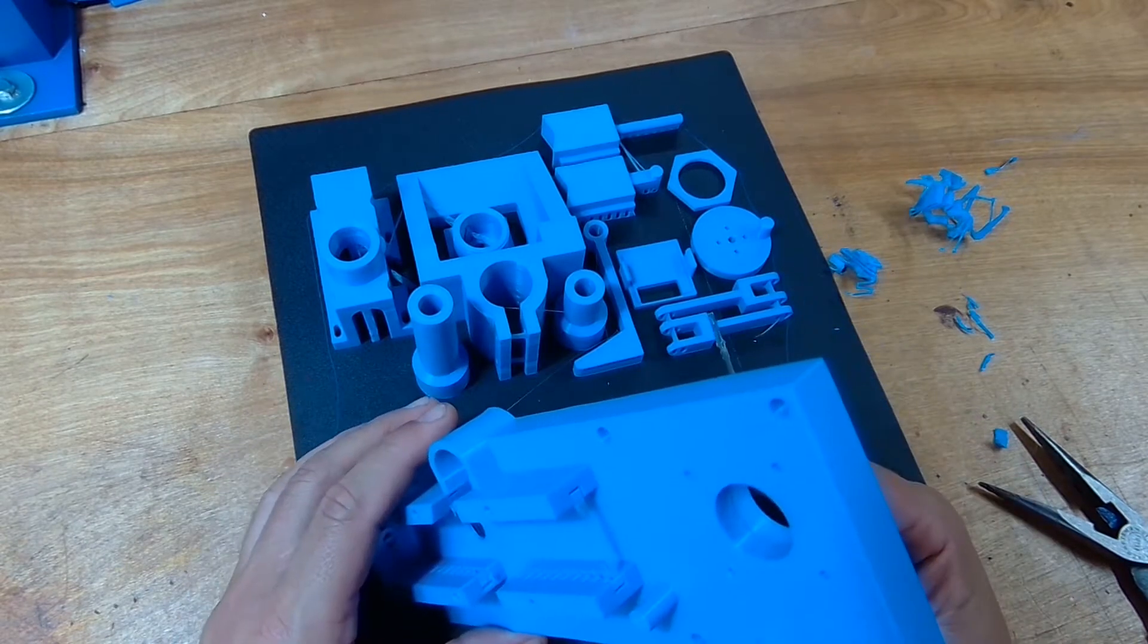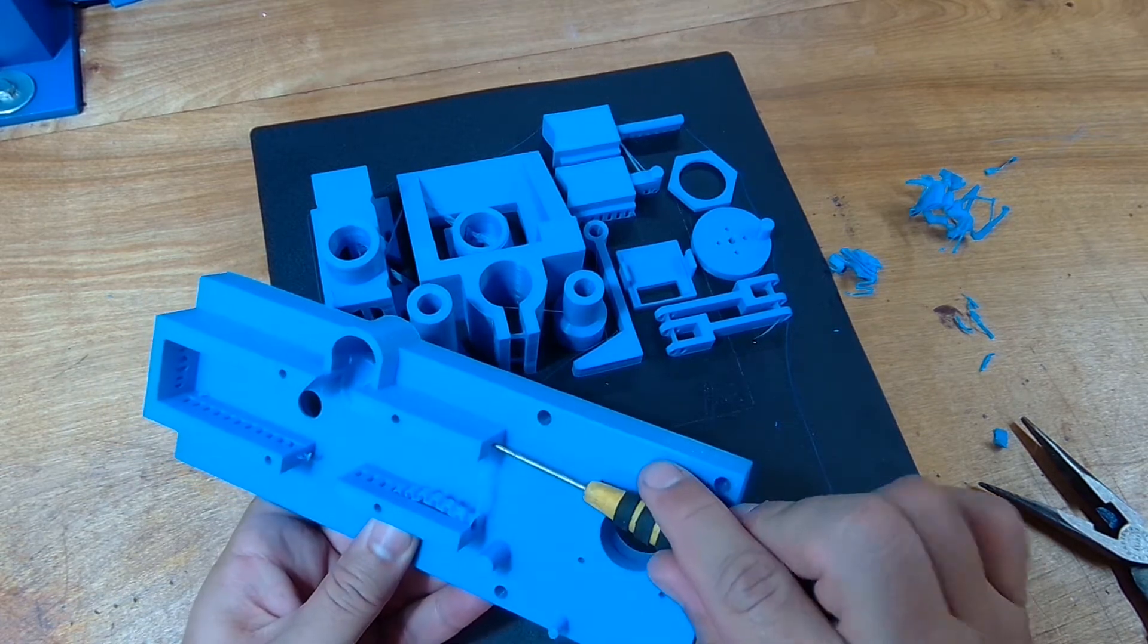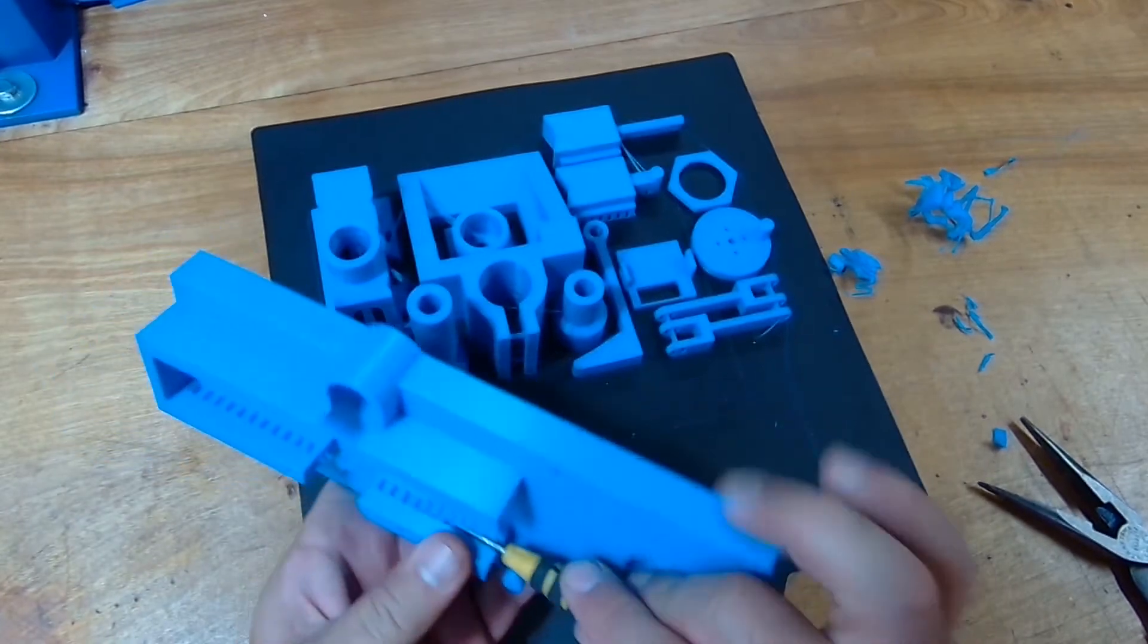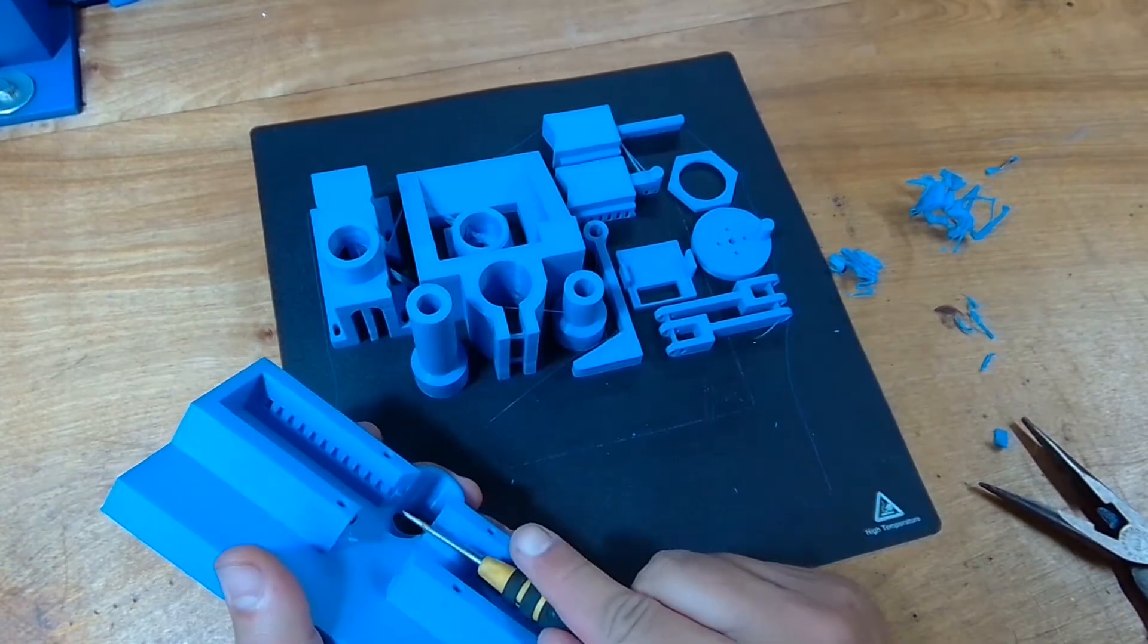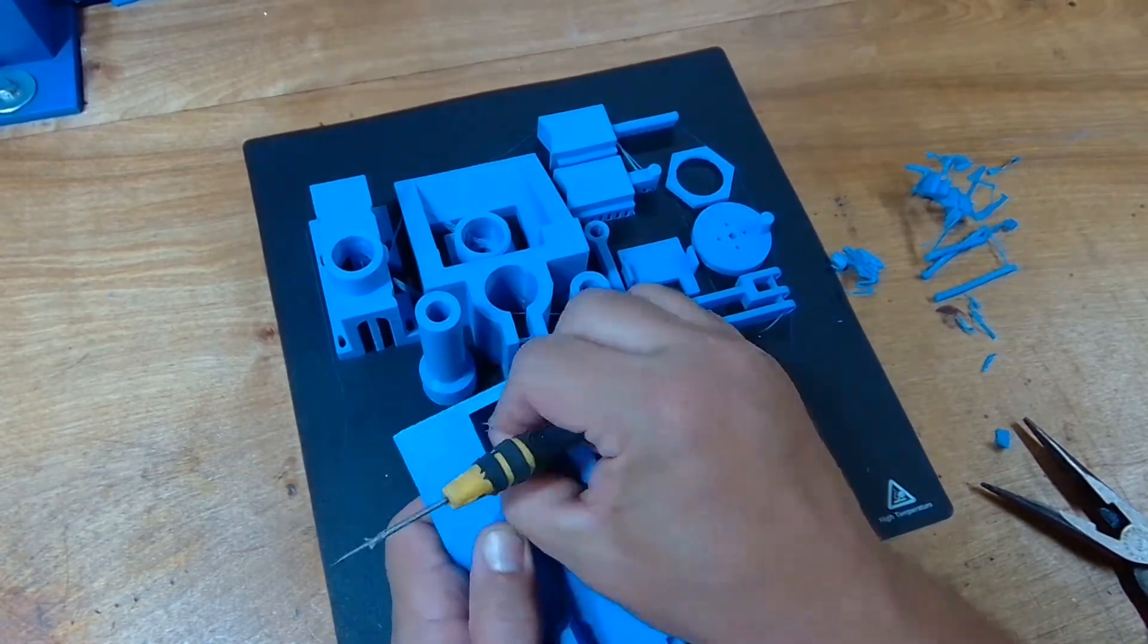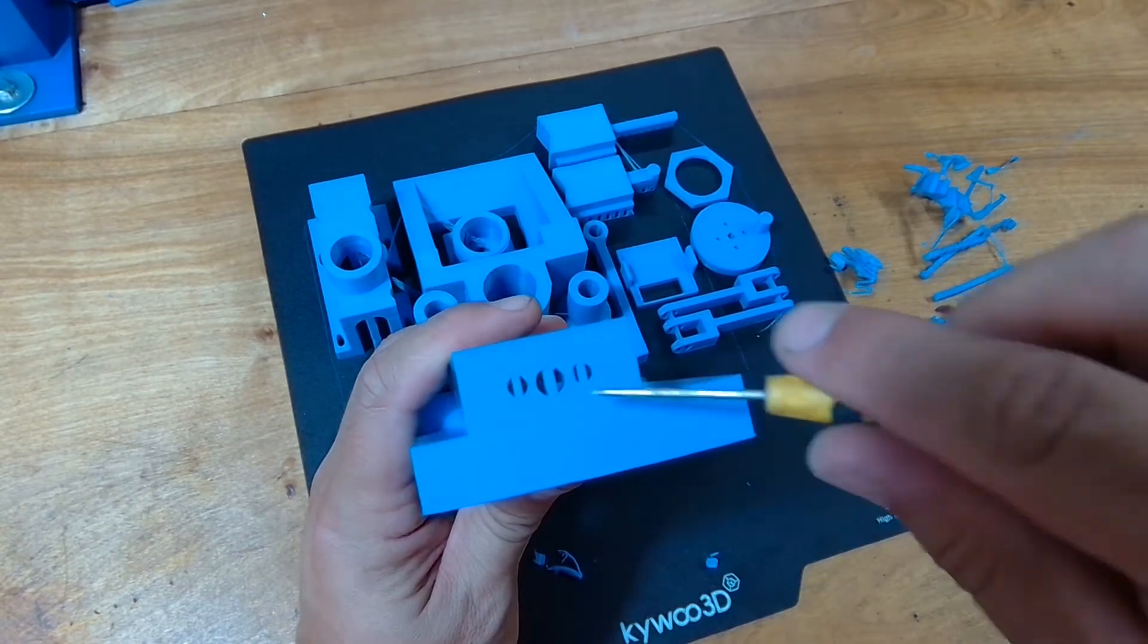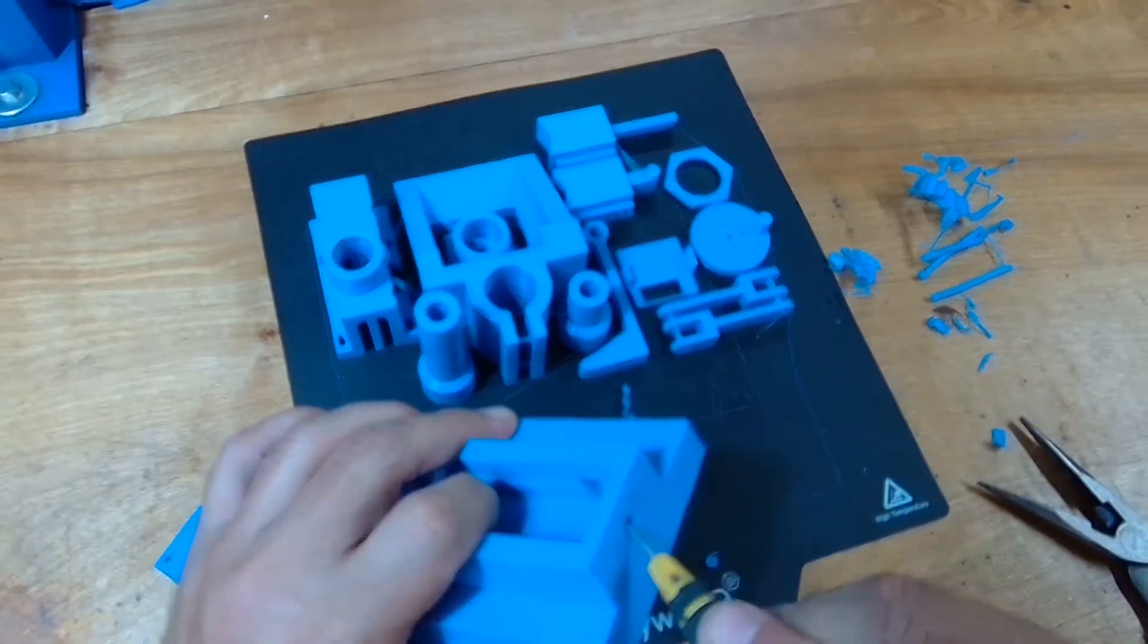All right, so this is threaded in here, so we've got to get that cleaned up. There's a little bit more support kind of stuck in there. On this piece, the other places where there's support is in this track here. That should come out pretty easy, and I'm just using a small flat screwdriver here for kind of like a pry bar.